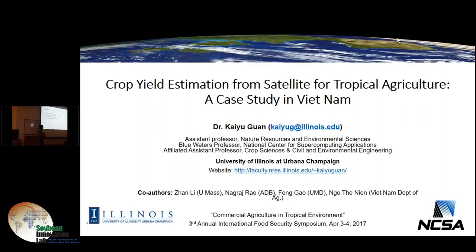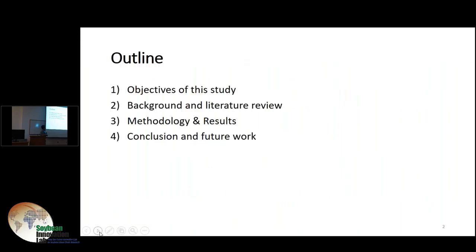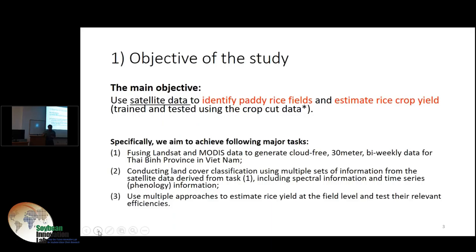I will talk about the work from these four aspects: objective, background, methodology, and then conclude my work. There is also some discussion about future work. The main objective here is we really want to identify where are the crop fields that grow paddy rice and estimate the crop yield.